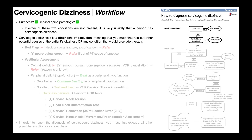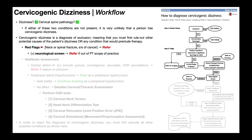The other important thing to understand is that this is a diagnosis of exclusion — you have to first rule out other potential causes of dizziness or anything that would preclude therapy. You're going to screen for red flags using the Canadian C-spine rules. You might find a neck or spinal fracture, or signs and symptoms of cancer, among other things. In those cases, you would refer the person out.